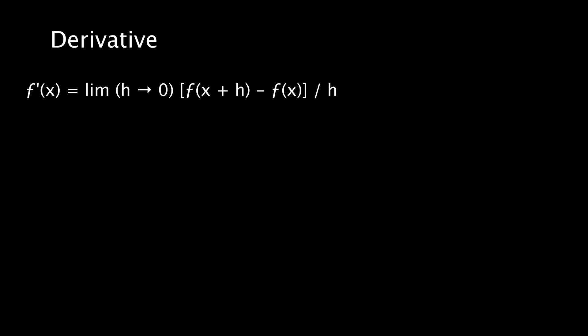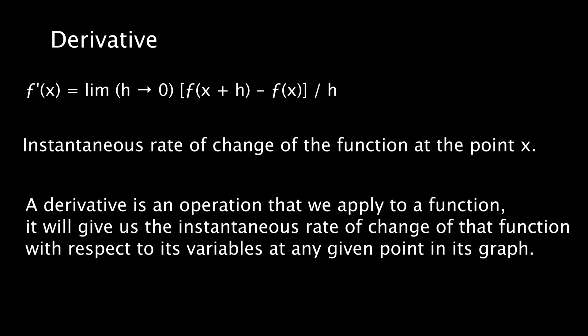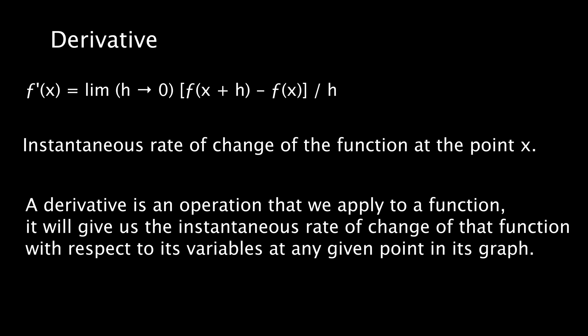The result of this operation will give us the instantaneous rate of change of the function at the point x. So, a derivative is an operation that we apply to a function, and it tells us the instantaneous rate of change of that function with respect to its variables at any given point in the graph.